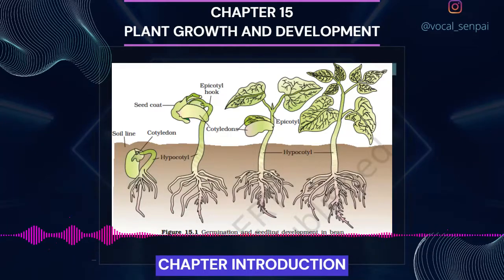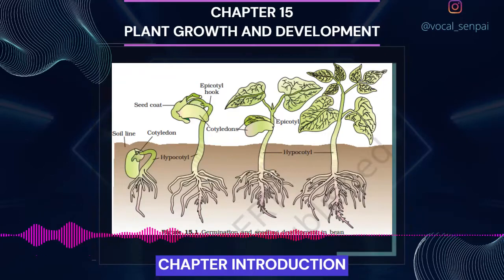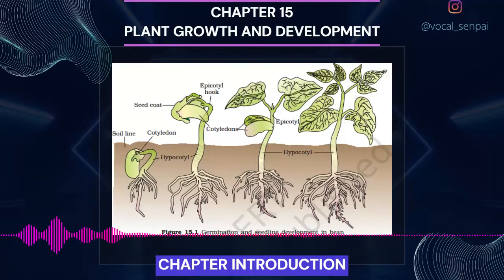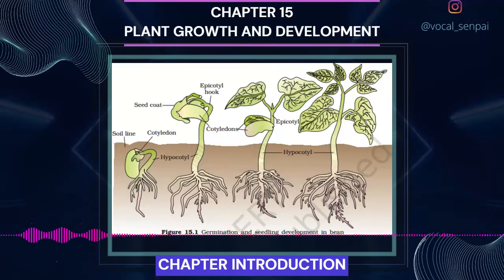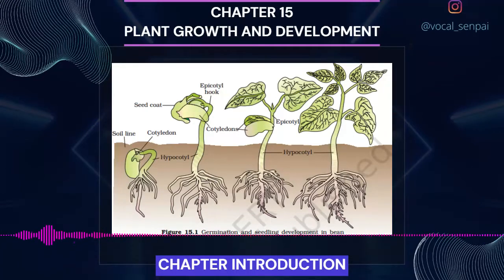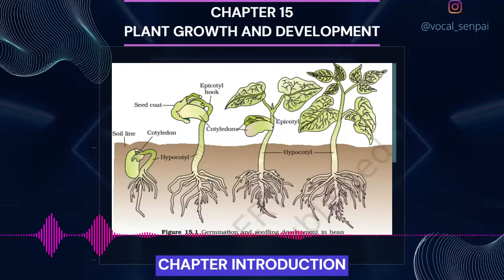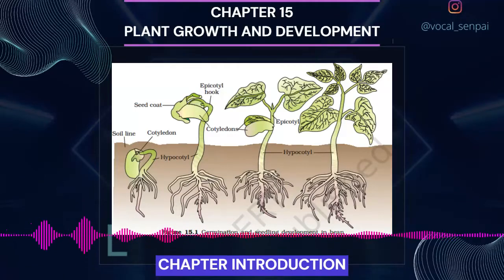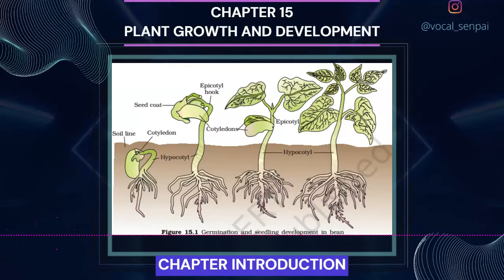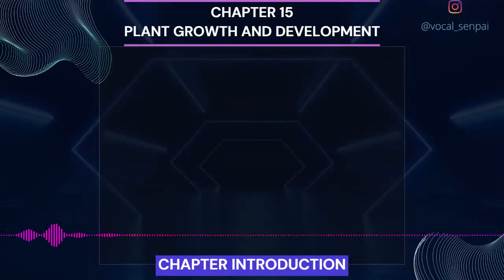The first step in the process of plant growth is seed germination. The seed germinates when favorable conditions for growth exist in the environment. In absence of such favorable conditions, the seeds do not germinate and go into a period of suspended growth or rest. Once favorable conditions return, the seeds resume metabolic activities and growth takes place. In this chapter, you shall also study some of the factors which govern and control these developmental processes. These factors are both intrinsic, internal, and extrinsic, external to the plant.